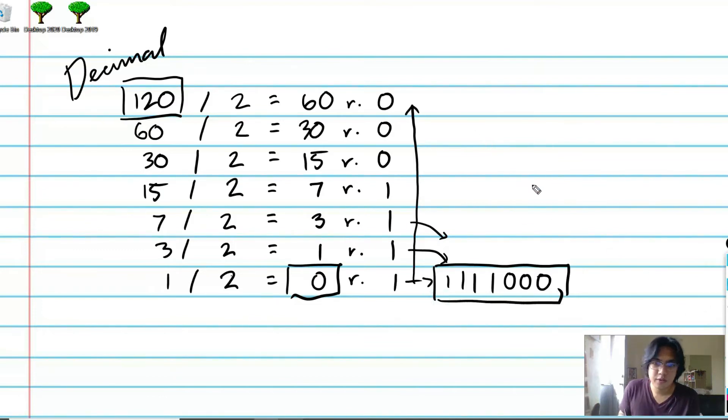The reverse is also true. So for example, if we now have a binary, let's just take this one, and we want to convert it back to its decimal representation. What we can do is, let me just erase this. What we can do is,